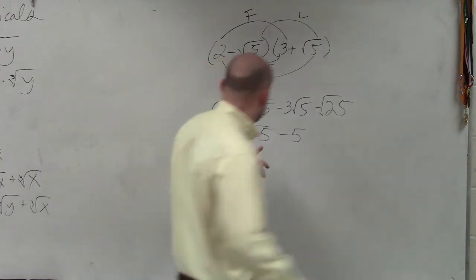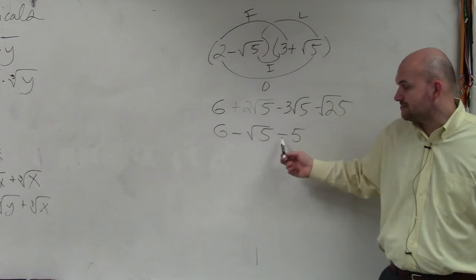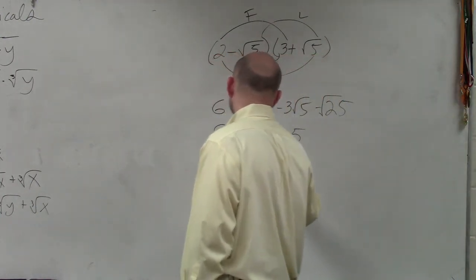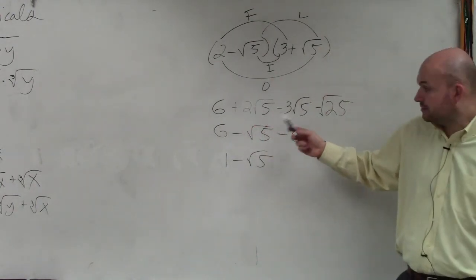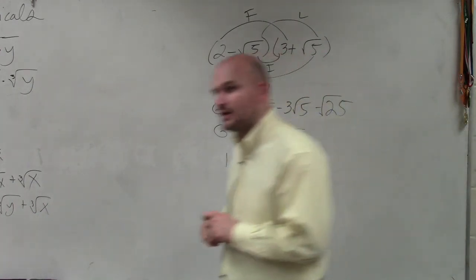Sorry. Now you can subtract - 6 minus 5 is going to be 1. Well, I did 2 minus 3, which is negative 1. And that's your final answer.